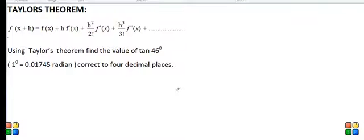Welcome my dear friends to sharmaclassesnakpu.com. Here is a problem on Taylor's theorem in which we are asked to find the value of tan 46 degrees correct to 4 decimal places.